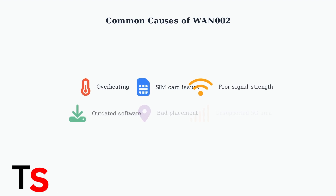Several factors can trigger the WAN002 error. The most common causes include gateway overheating, SIM card problems, poor signal strength, outdated firmware, incorrect device placement, or trying to use 5G in an unsupported area.